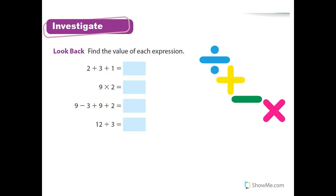Looking back on the value of each expression: two plus three is five, five plus one is six, nine times two is 18, nine minus three is six, six plus nine is 15, 15 plus two is 17, and 12 divided by three is four.